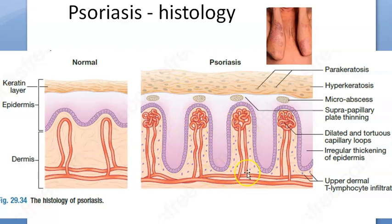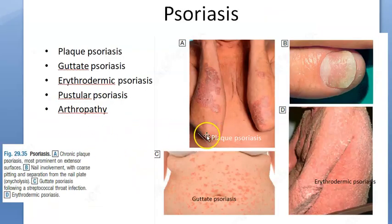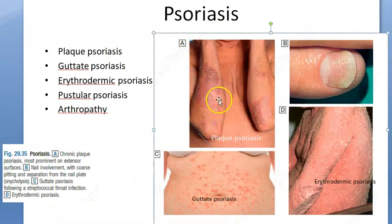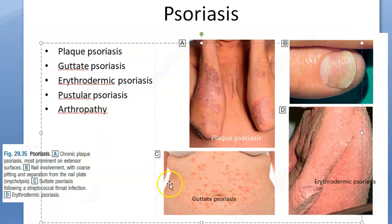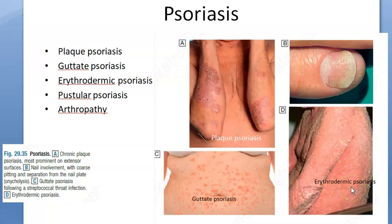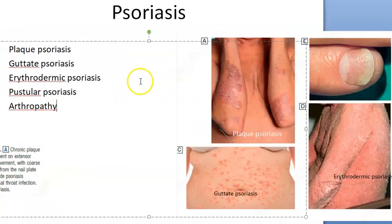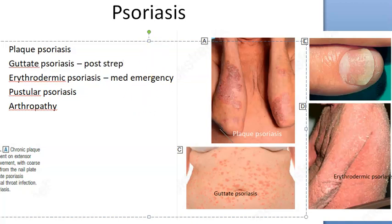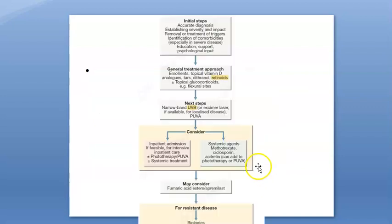The types of psoriasis: plaque psoriasis is very common, with nail pitting and onycolysis. Guttate psoriasis — the lesions are drop-shaped, small, erythematous, scaly, and numerous; it may occur after streptococcal infection. Erythrodermic psoriasis is a medical emergency — it is generalized. So: guttate is post-strep, and erythrodermic is a medical emergency.